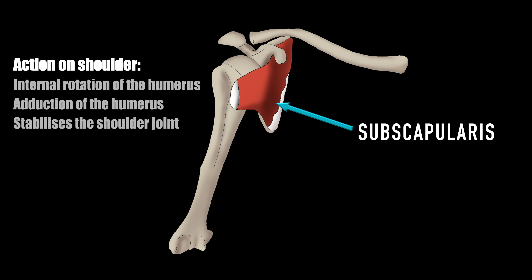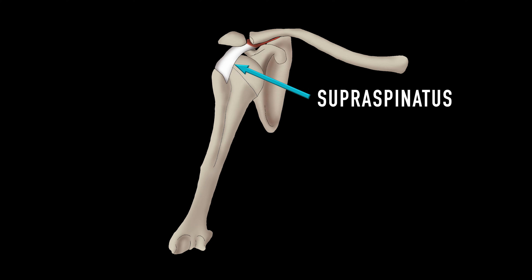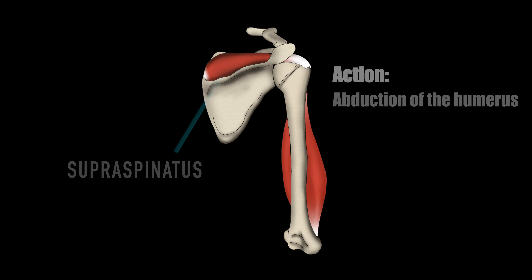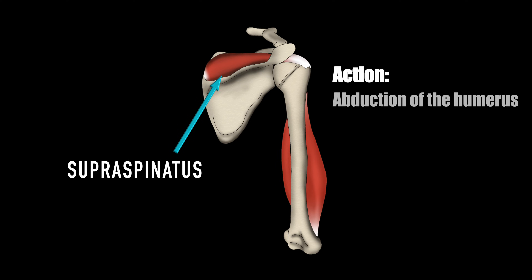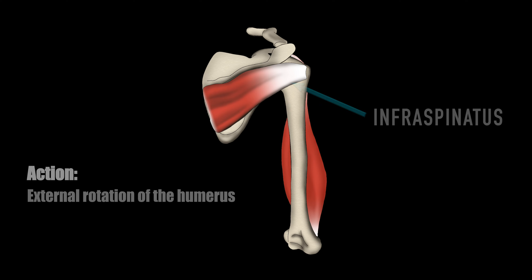The subscapularis originates from the subscapular fossa and its tendon inserts onto the lesser tubercle of the humerus as seen here. The tendons of supraspinatus and infraspinatus can be seen from the front, but to demonstrate their anatomy it is best to view them from behind. The supraspinatus originates within the supraspinous fossa of the scapula and its tendon inserts onto the superior facet of the greater tubercle. The infraspinatus originates within the infraspinous fossa of the scapula and inserts onto the middle facet of the greater tuberosity.